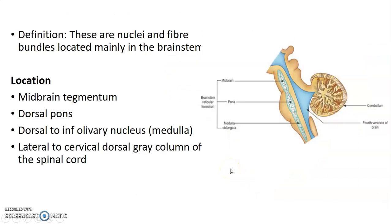What is the reticular formation? These are the nuclear and fiber bundles located at the brainstem, mainly at the midbrain tegmentum, the dorsal pons, dorsal to the inferior olivary nucleus in the medulla, and lateral to the cervical dorsal gray column of the spinal cord.